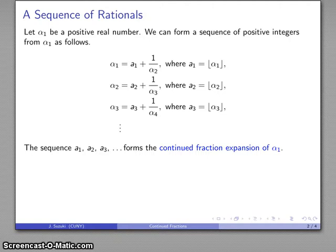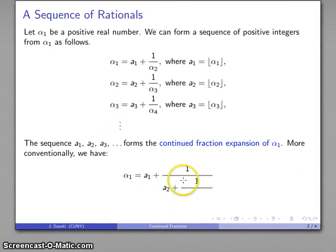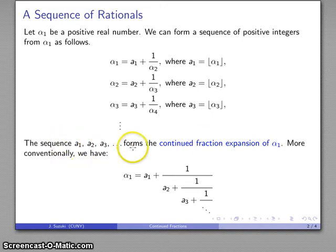Describing the continued fraction expansion as a sequence of integers is good mathematics, but it's kind of hard to visualize what that actually represents. Here's a slightly more conventional way of looking at it. We have alpha 1 equal to a 1 plus 1 over alpha 2; alpha 2 is a 2 plus 1 over alpha 3; alpha 3 is a 3 plus 1 over alpha 4, and so on. So when we write out the continued fraction expansion, formally it's a sequence of integers, but it's convenient to think about it as a fraction of this nested form — hence the term continued fraction.